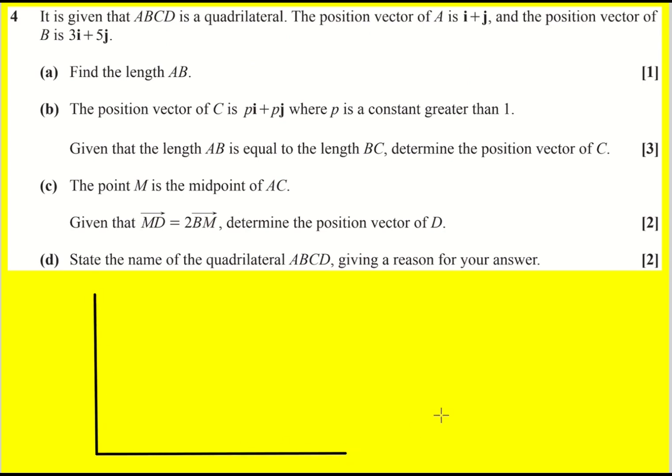I think I'm going to, because we're working in two dimensions, I'm just going to roughly be accurate. So there we go, that can be point a at 1, 1. Then the position vector of b is 3i plus 5j. So around about here, the b.